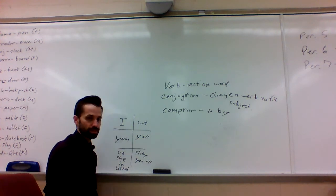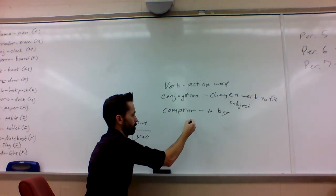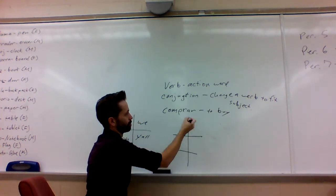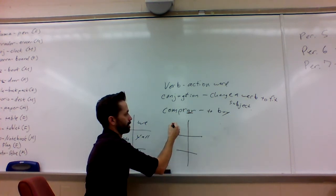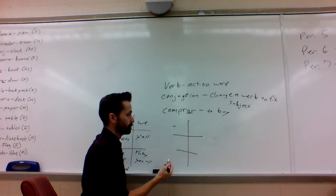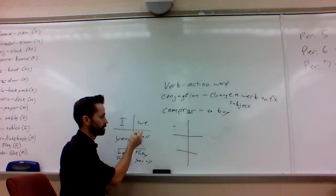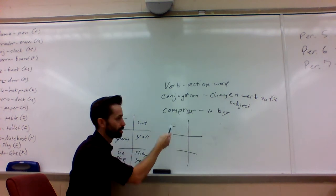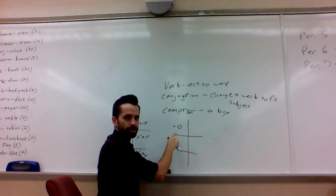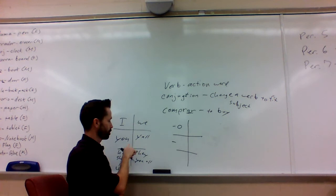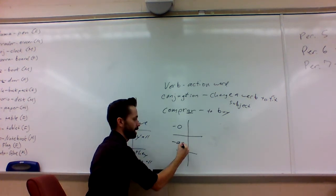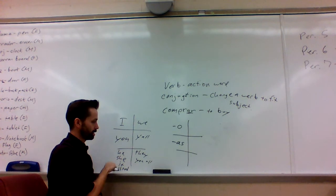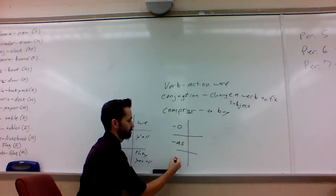And these are put in these boxes for a reason with verbs that end in AR like Comprar. You get certain suffixes that you use that correspond with these subjects. So if I'm the one who's doing the buying, I need to use this suffix with an O. If you're the one who's doing the buying, then I need to use this suffix, which is AS. He, she, it, or usted, which is the formal you, they use A.